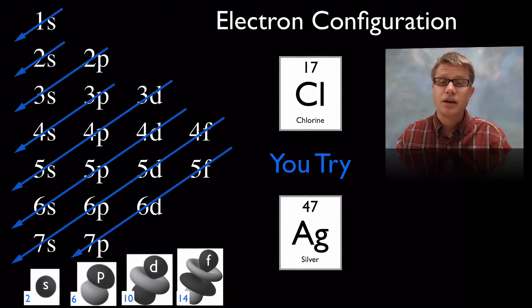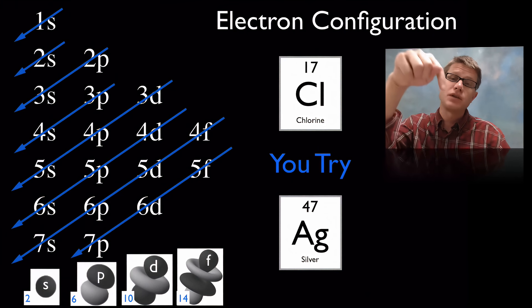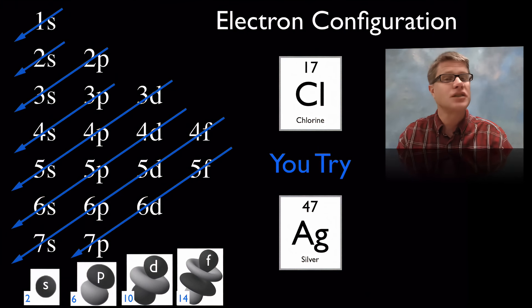And so here's a couple for you to try. Could you try chlorine which has 17 electrons or silver which has 47? I'll put the answers in the video descriptions down below. But give it a try.